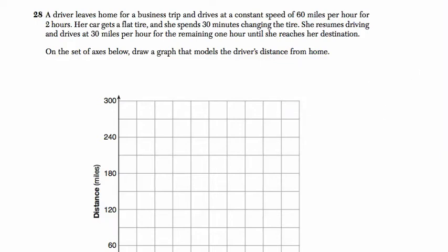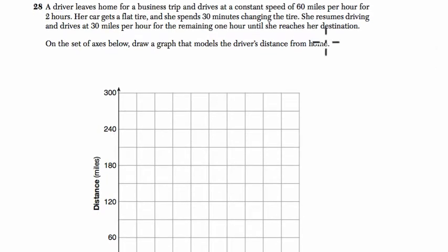We're going to solve this problem together because I couldn't fit it all on the screen, but you should pause at certain times and make sure to work on it on your own. Let's start by reading the premise. A driver leaves home for a business trip and drives at a constant speed. So I'm thinking constant speed or slope at speed, right? And it's constant, so we're going to have a line. 60 miles per hour for the first two hours.